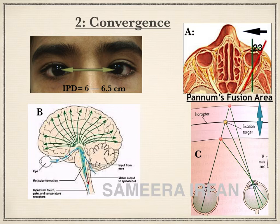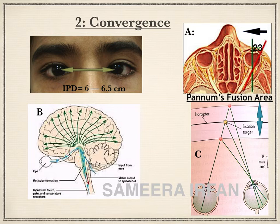Since both eyes are focused at the same object in the Panum's fusion area, as seen in figure C, the image is located at corresponding retinal areas of both eyes, which are almost similar in size, sharpness, and brightness. They are therefore fused in the brain and appreciated as one by the process of sensory fusion, producing a three-dimensional image. This sensory fusion locks both eyes into alignment in all directions of gaze by signals from the sensory cortex going to the motor areas of the brain.